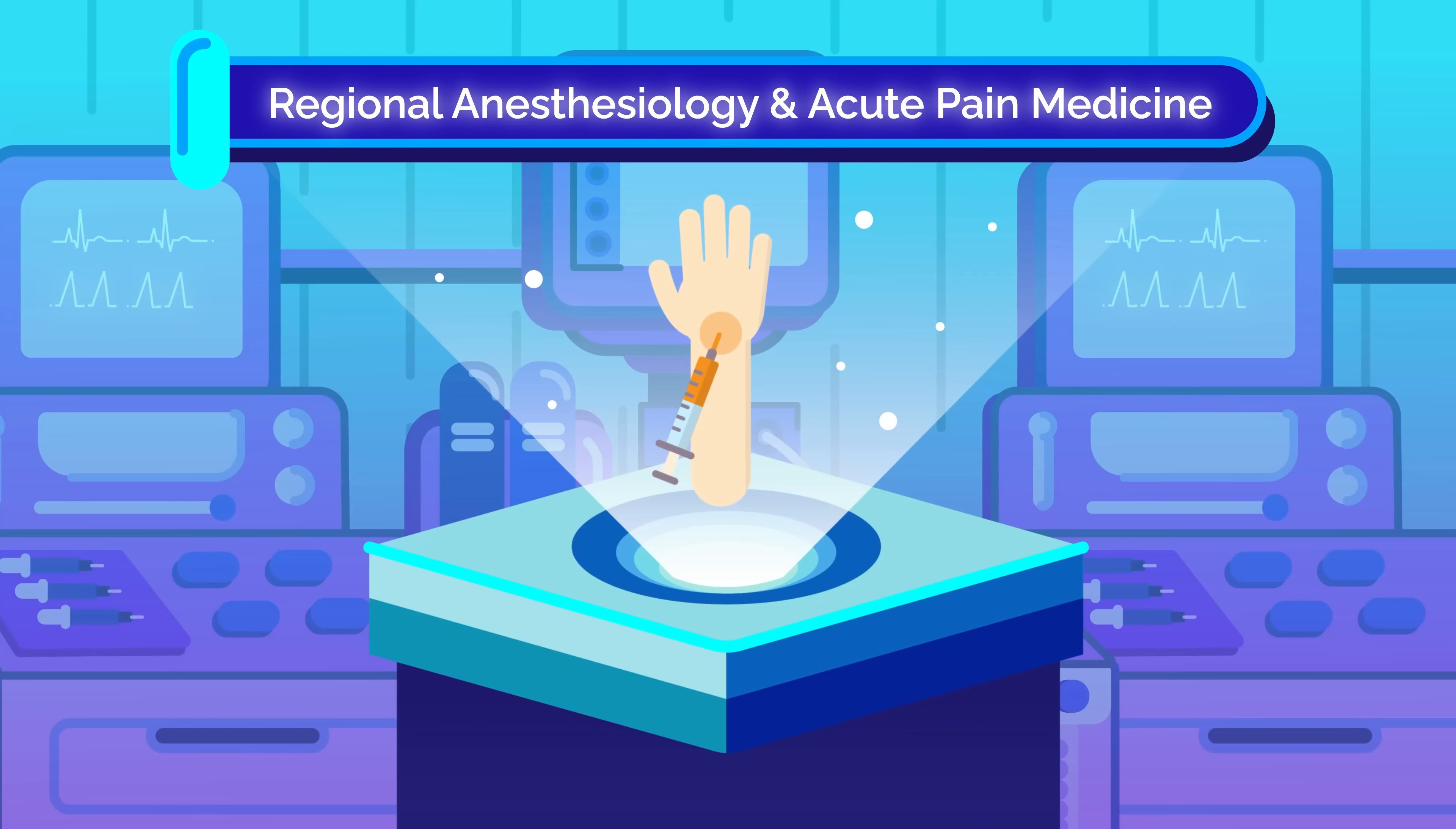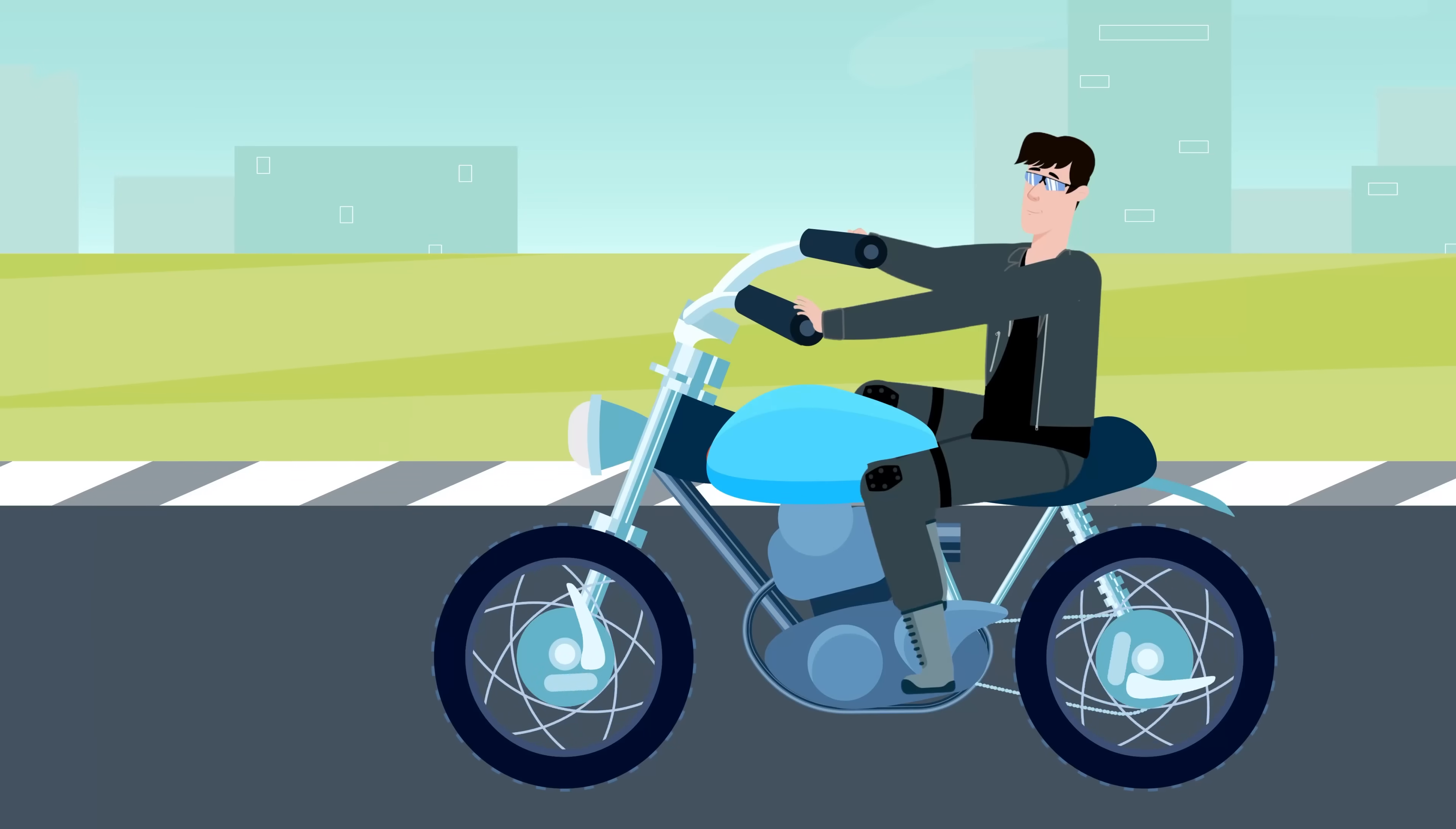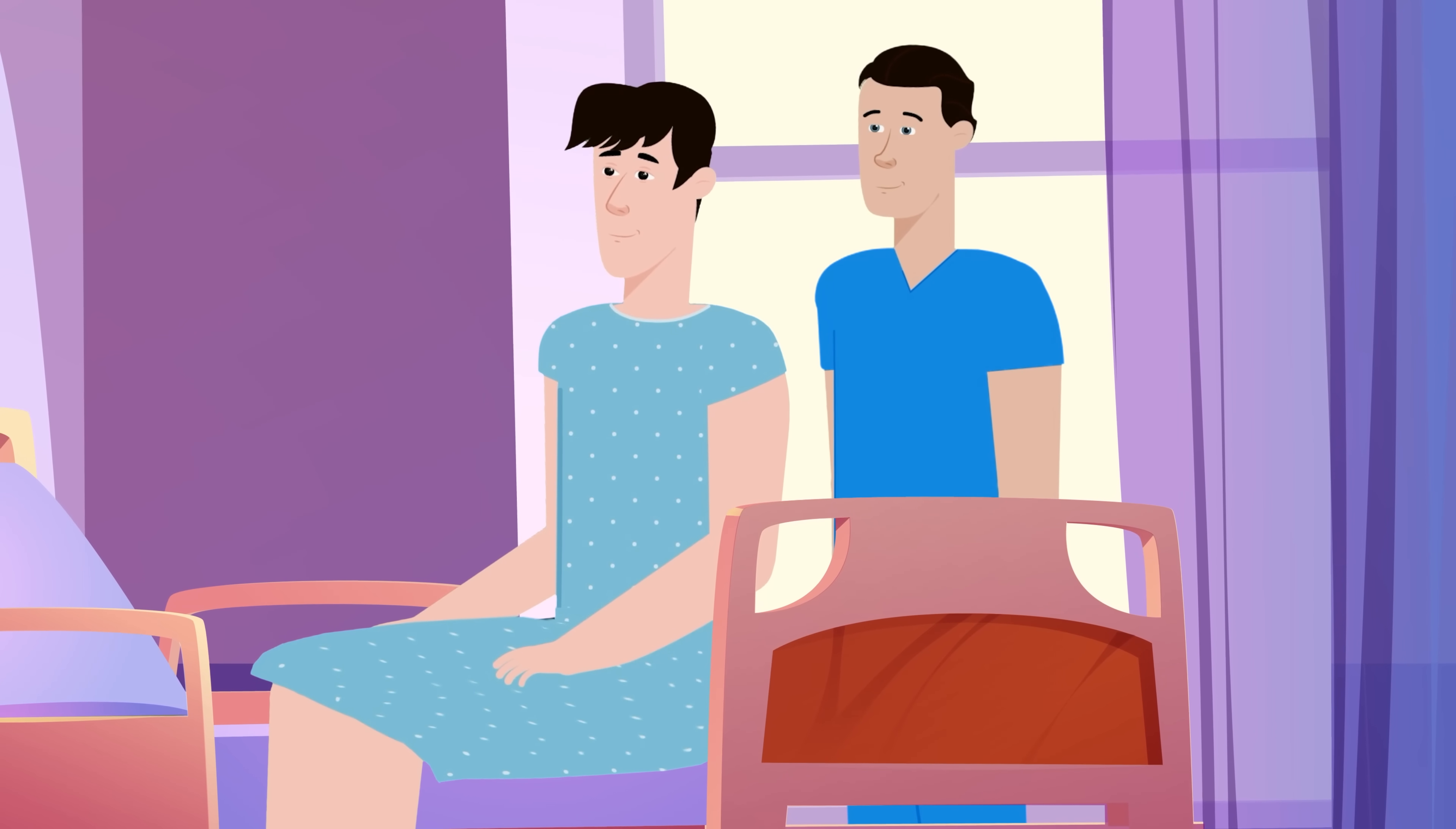Next up is regional anesthesiology and acute pain medicine, which focuses on nerve blocks and catheter placements for post-operative pain control, everything from single-shot femoral blocks to continuous paravertebral catheters. Imagine a patient who just had five rib fractures from a motorcycle crash. Oral meds aren't enough, and systemic opioids are too risky for the patient's already strained breathing.